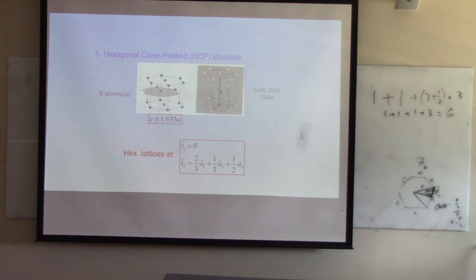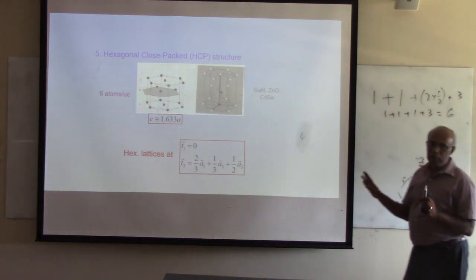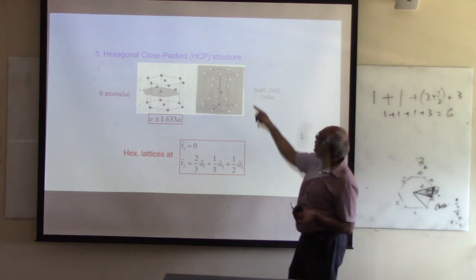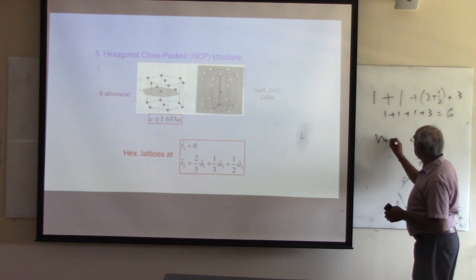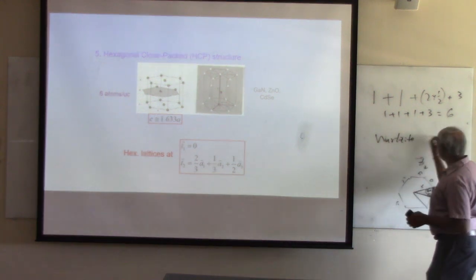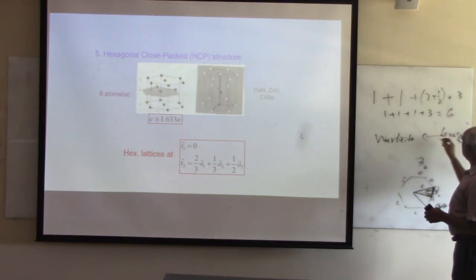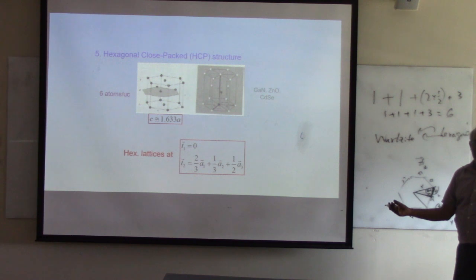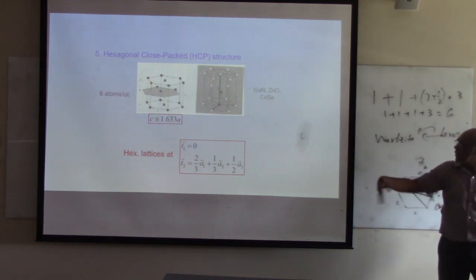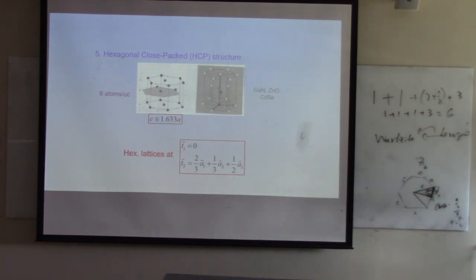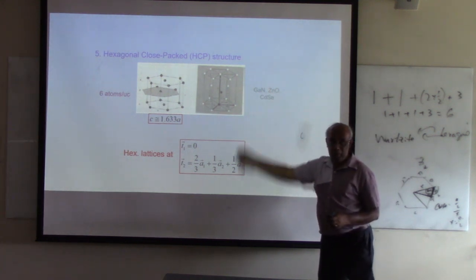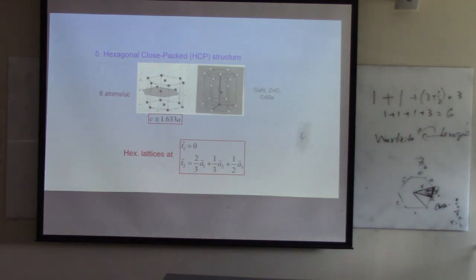Gallium nitride is called a wurtzite structure, not just hexagonal. When you have two different atoms in the hexagonal structure — like zinc oxide, gallium nitride, or cadmium selenide — we call it a wurtzite structure. In chemical engineering we do a lot of work on zinc oxide and gallium nitride, so please remember those are wurtzite structures.